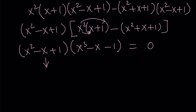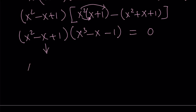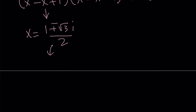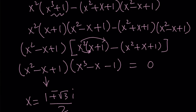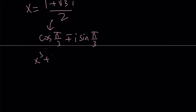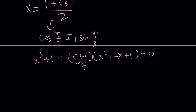For the quadratic x squared minus x plus one, using the quadratic formula gives x equals one plus or minus the square root of three i, divided by two. The roots are complex, and they're actually special numbers — they can be written as cosine of pi over three plus or minus i times sine of pi over three. In other words, they are the cube roots of negative one, which makes sense because x cubed plus one factors accordingly.